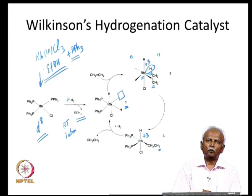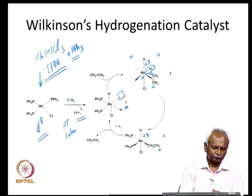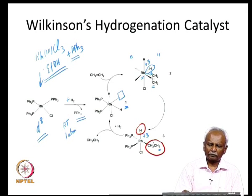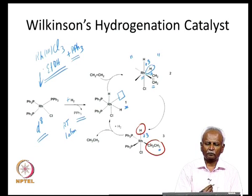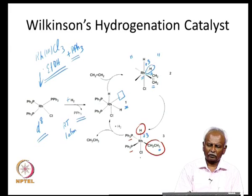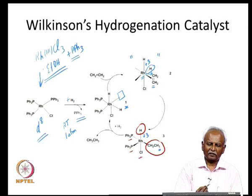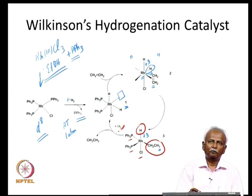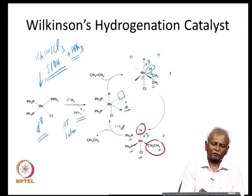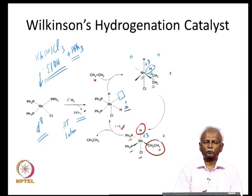This molecule is now set up to do a reductive elimination. Eliminating the hydride and the ethyl group from the rhodium(III) center gives a rhodium(I) center with two PPh₃ units and one chloride — the three remaining ligands. This rhodium(I) center can readily add dihydrogen to give again the catalytically important intermediate labeled as 1. So the cycle involves: oxidative addition of hydrogen as the first step giving intermediate 1, then a substitution reaction where ethylene occupies a vacant coordination site.